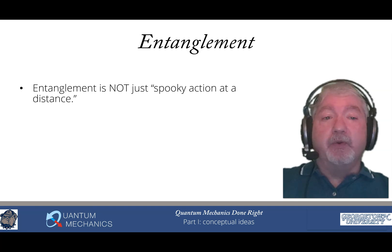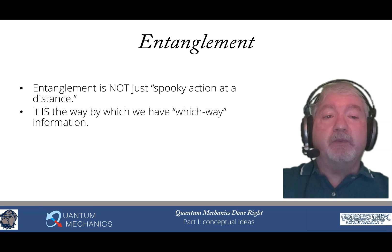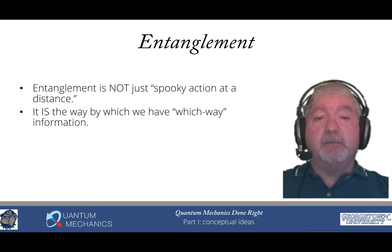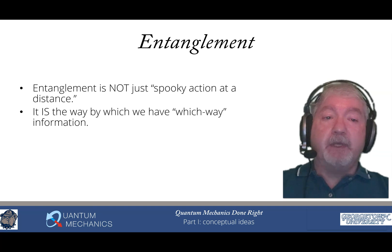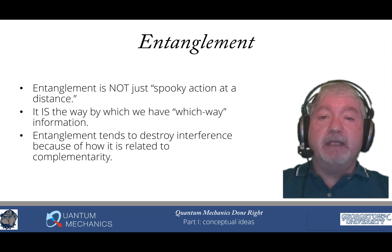Entanglement is not just spooky action at a distance. Most of you have probably learned that, but that is not correct. You can even have quantum entanglement with a single particle where nothing is happening at a distance — everything is local. Entanglement is the way by which we get which-way information. So when you have an entangled state, you won't have interference. Entanglement tends to destroy interference because of the way it's related to complementarity — it's simply the fact that you have which-way information that then tells you that you can't have interference.